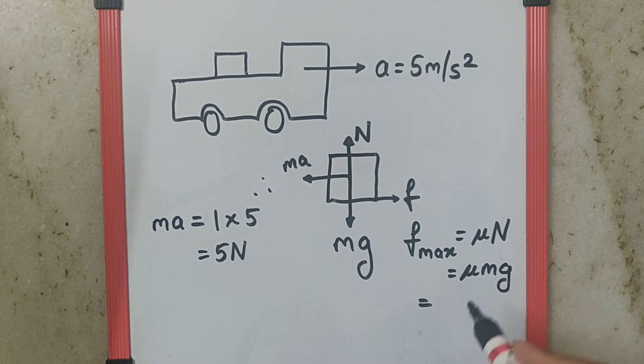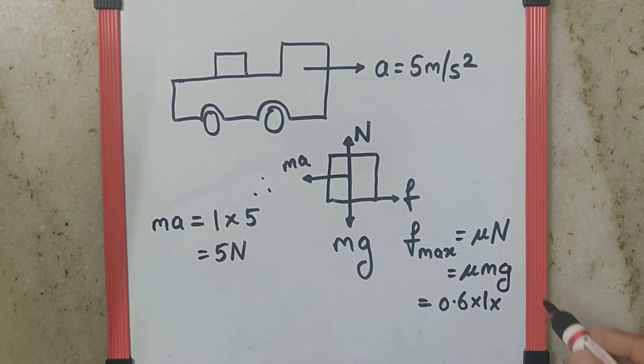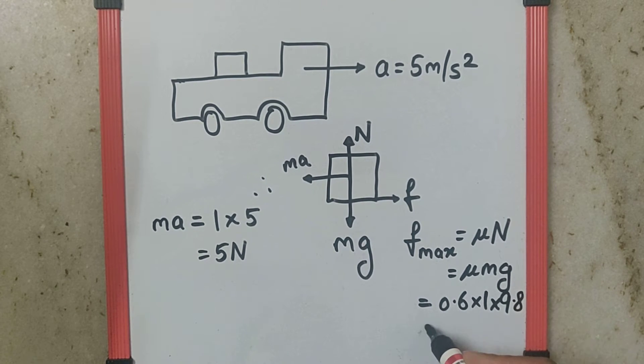The μ given in the question is 0.6, mass is 1, and we can say g is 9.8. If you calculate this, we get the value as 5.88N.